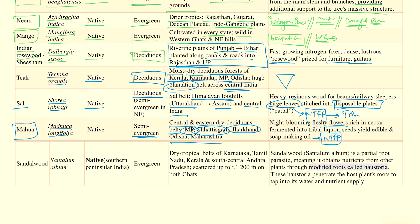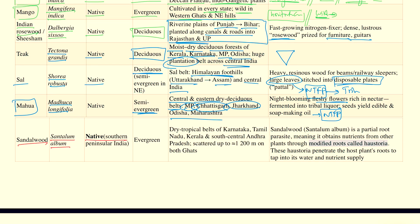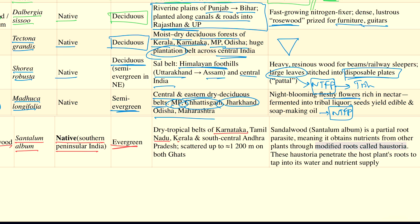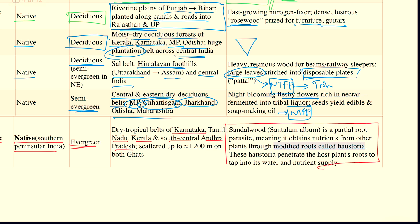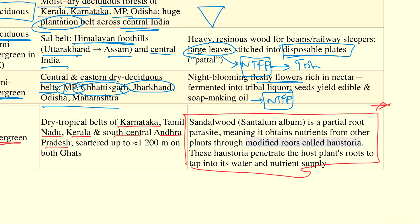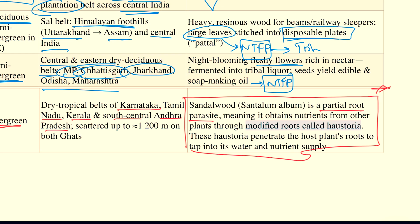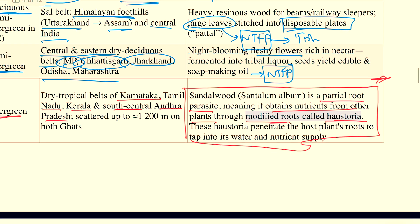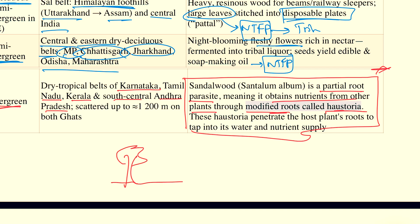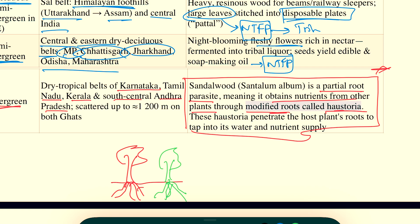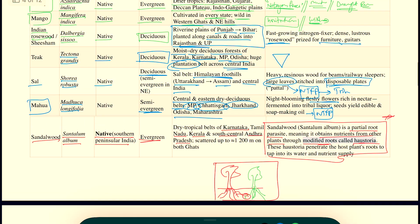Coming to Sandalwood — Santalum album — it is a native tree mostly confined to the southern peninsula of India. It is an evergreen tree. The special feature which is very important: Santalum album, or Sandalwood, is a partial root parasite. What this means is that it obtains nutrients from other plants through modified roots called haustoria. The Sandalwood tree has special roots that can tap into the roots of other trees and obtain water and nutrients from them. Please remember this feature because you can expect a question on these lines.